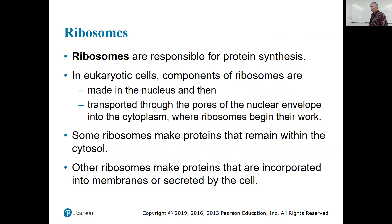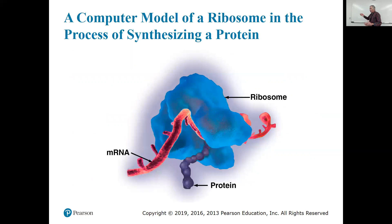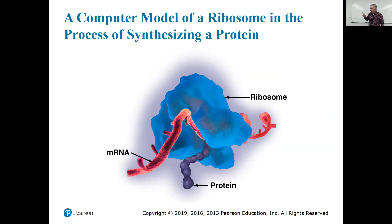Some ribosomes make proteins that remain within the cytosol. Other ribosomes make proteins that are incorporated into membranes or are secreted by the cell — and these are going to be proteins made by what's called the rough endoplasmic reticulum, or rough ER. There's a molecule called mRNA that is a copy of a gene in the nucleus, and it's going to be read and translated by a ribosome.